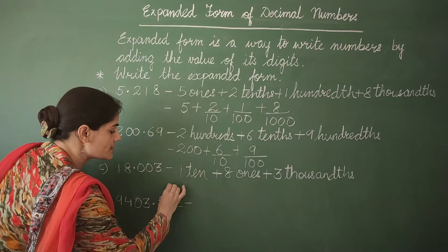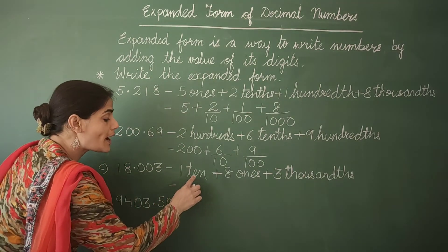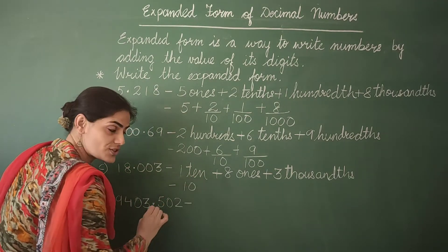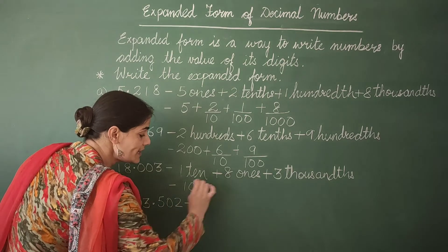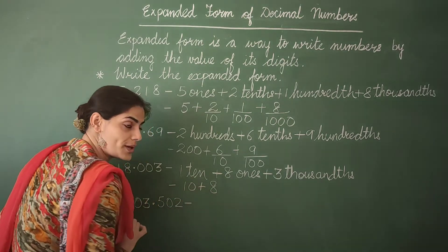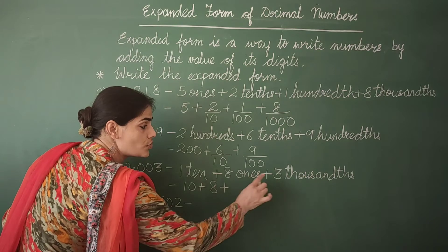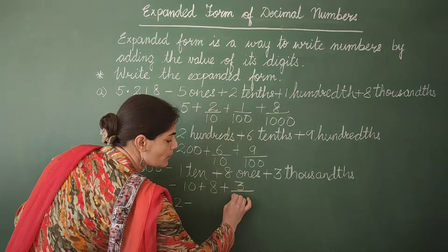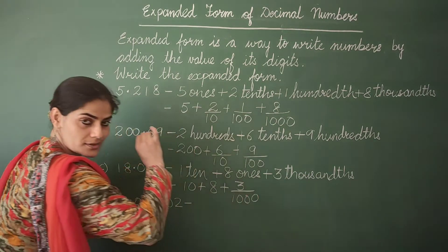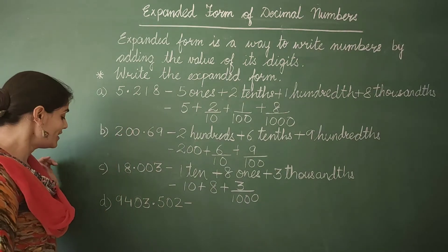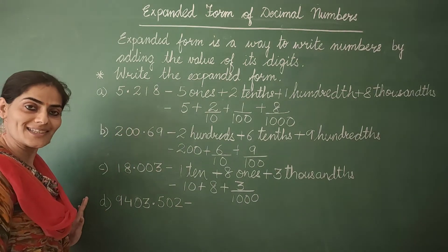Let's express it in simple form now. 1 ten is equal to 10. Plus 8 ones is equal to 8. Plus 3 thousandths is equal to 3 upon thousand. Have you all understood? Now we move to part D.